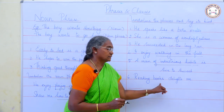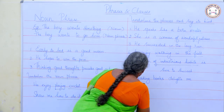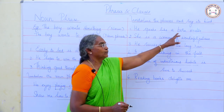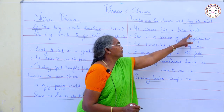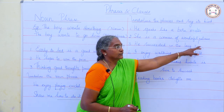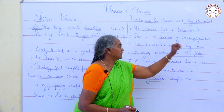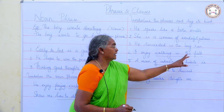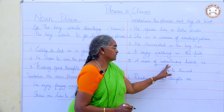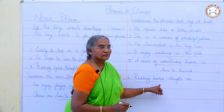'Reading books delights me.' What delights me? 'Reading books' — so 'reading books' is the noun phrase. Summary: 'Like a born orator' — adverbial phrase. 'Of wonderful patience' — adjective phrase. 'In the long run' — adverbial phrase. 'Walking in the field' — noun phrase. 'Of industrious habits' — adjective phrase. 'Reading books' — noun phrase.